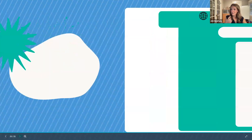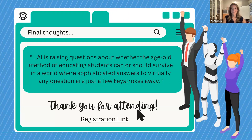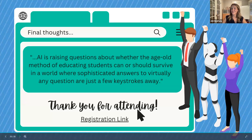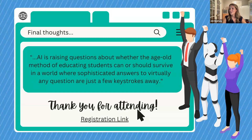I did want to end with this one final thought. I pull things out of magazines and off websites when I see things that really stop me in my tracks. This was in the latest issue of The Week magazine, and it really did stop me. It was the opening sentence of an article about AI and schooling and how it was changing schooling. It said: 'AI is raising questions about whether the age-old method of educating students can or should survive in a world where sophisticated answers to virtually any question are just a few keystrokes away.' That's the type of spark that we're going to use when we start talking about these tools — can we use them? Yes. Should we use them? What are the implications for the broader horizon of education, and how does it relate to the history of how we've educated students in this country for the past hundred years?